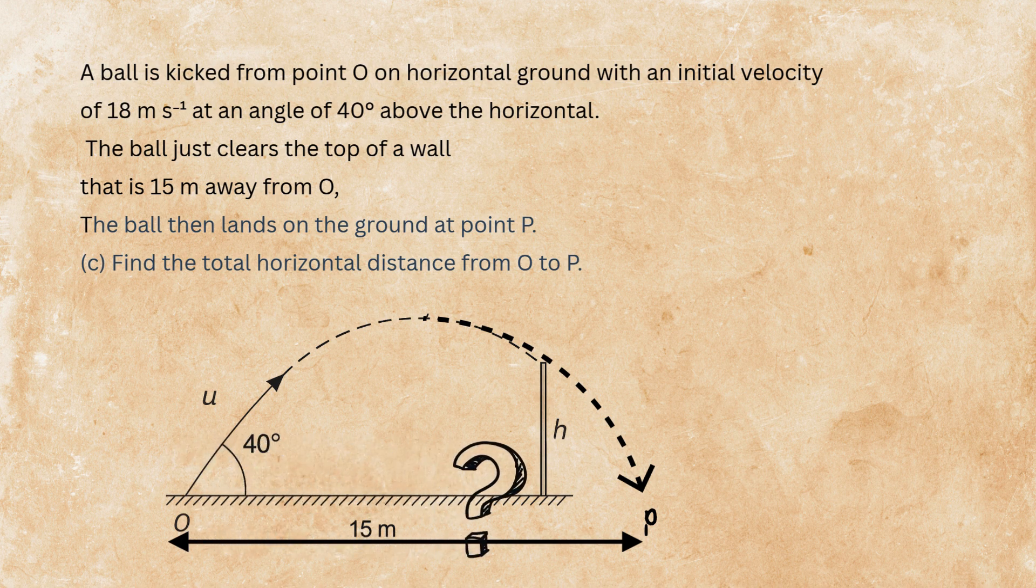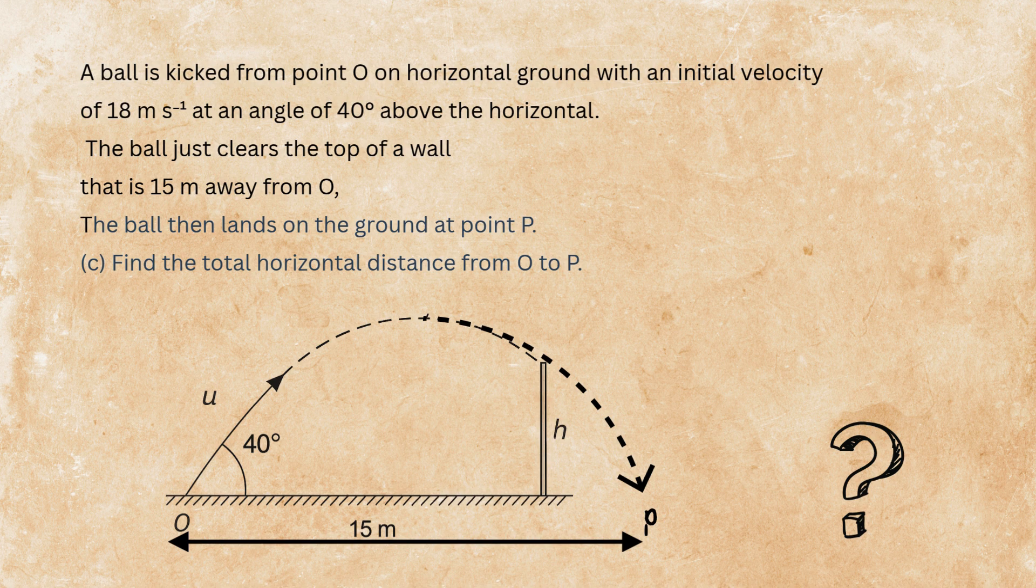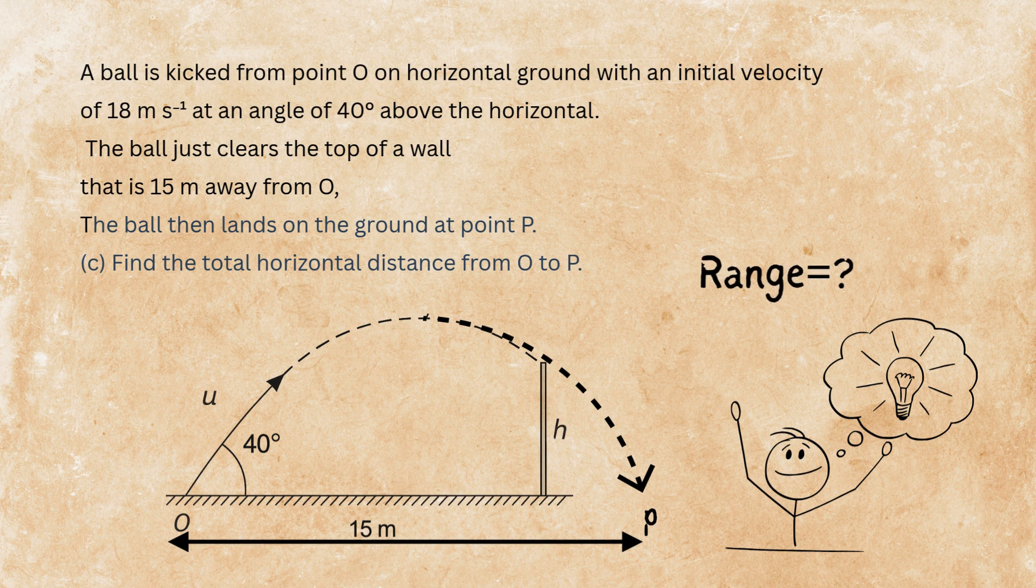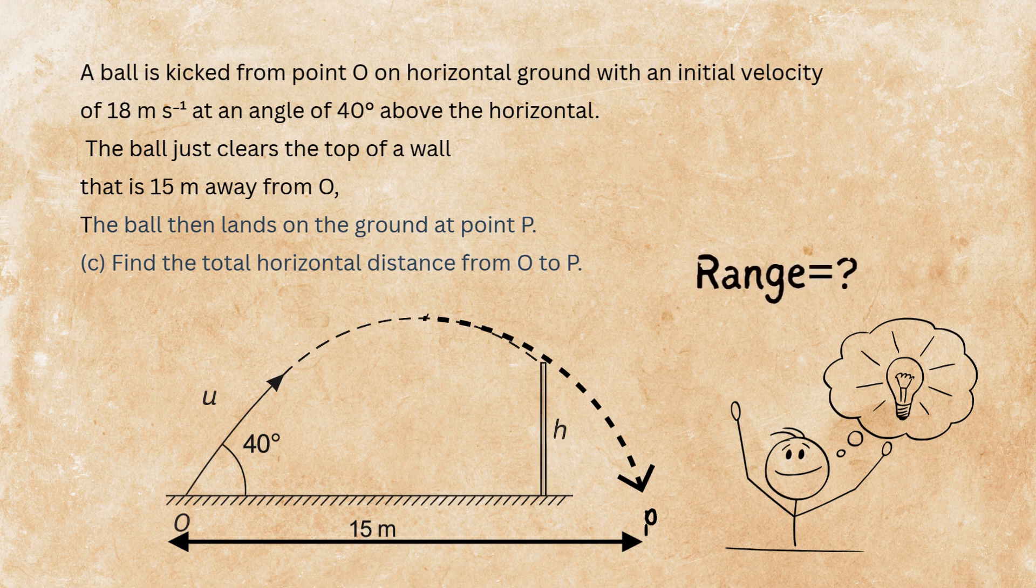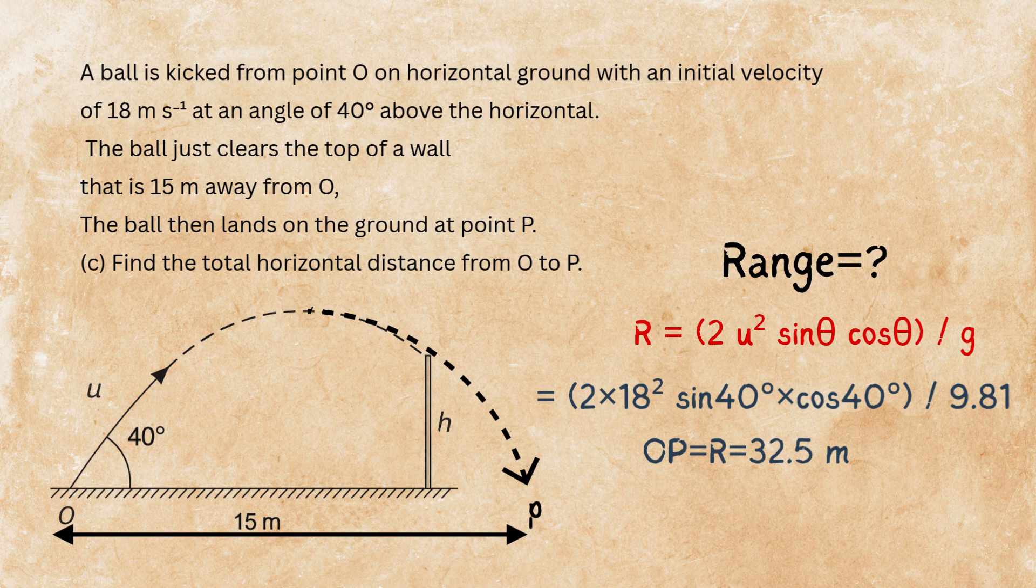The last part of the question, part C, is a tricky one. It says, find the total horizontal distance from point O to the ground point P. What does that remind you of? That's right. It's range. So, we are going to find range in this question. If you have a good physics note and you remember the formula for range, you have an easy time now. It's 2 U squared sine theta cosine theta over G. We have all this information from the question. So, we use the calculator. The range is 32.5 meters.